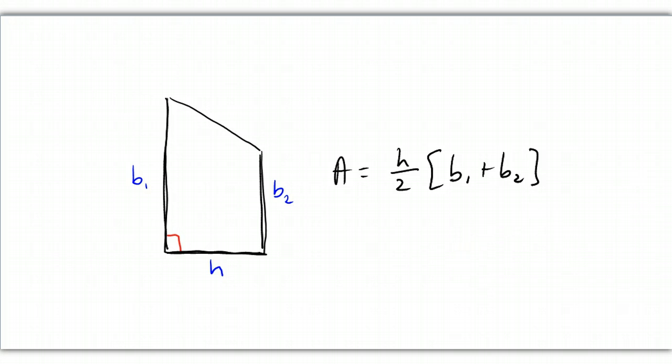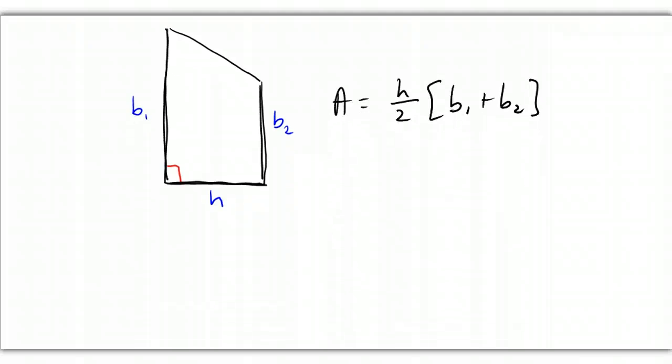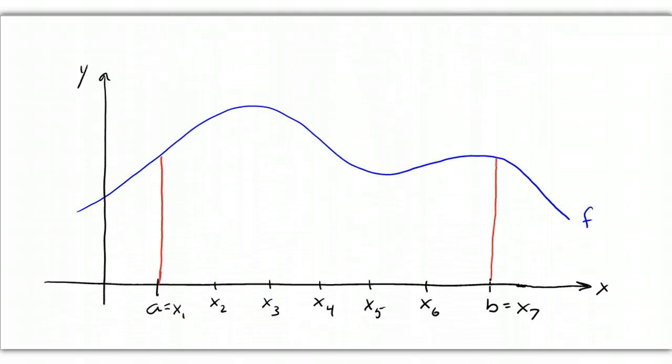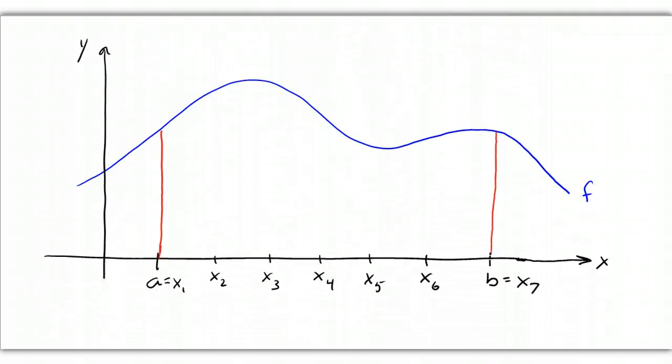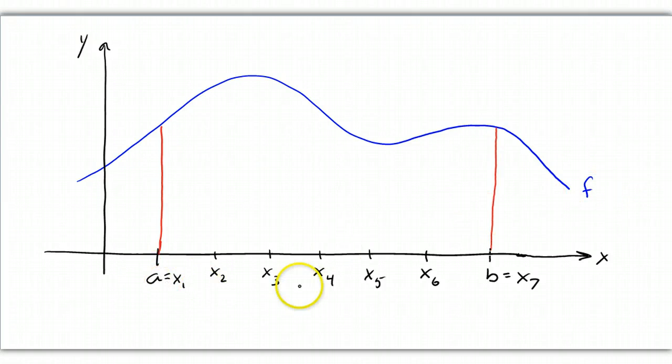And what we're going to do is just stack a bunch of trapezoids side by side underneath the curve and add them up. So for example, if I wanted to get the area under this function F from A to B, then my first trapezoid would go from X1 to X2. And my second one would go from X2 to X3. And then from X3 to X4.